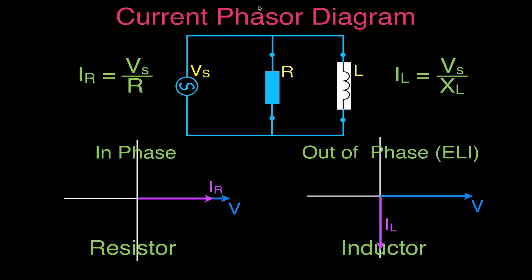Because we have a parallel circuit, the voltage across each branch is equal, and also equal to the source voltage. Remember: in series circuits the current is the same and voltage changes; in a parallel circuit the voltage is the same and the current changes.